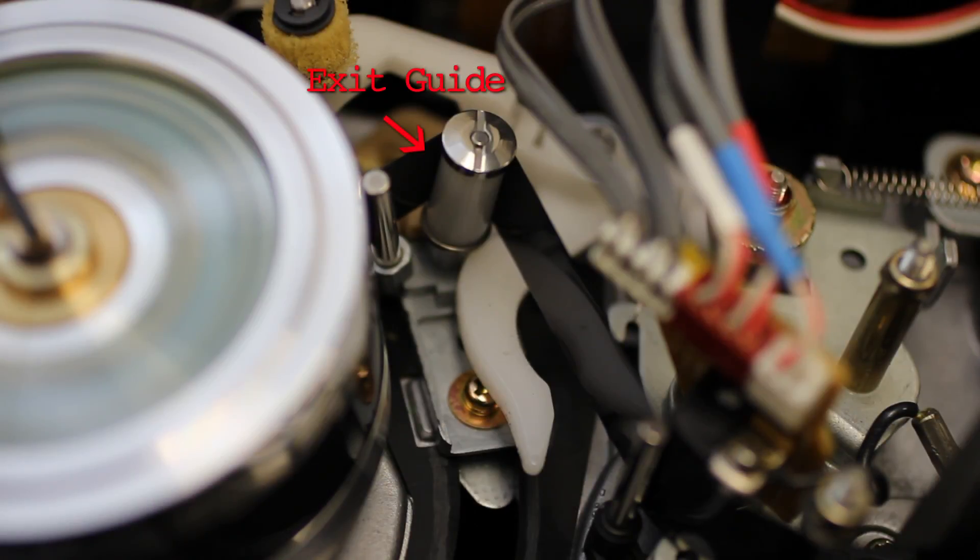The exit guide nicely complements the entrance guide. It helps wrap the tape around the video drum during threading, and also keeps the tape perfectly positioned for reading audio and video as the tape passes off the upper drum.